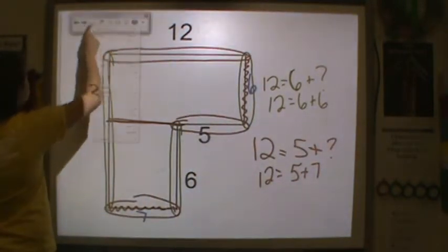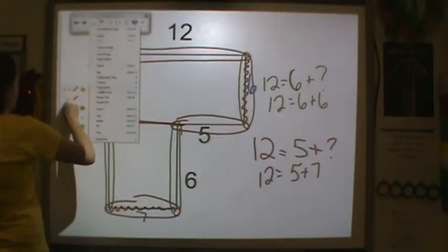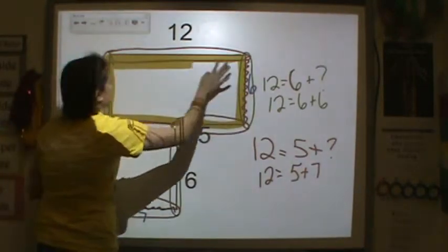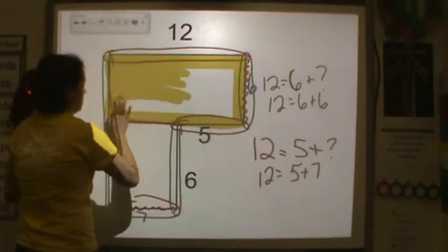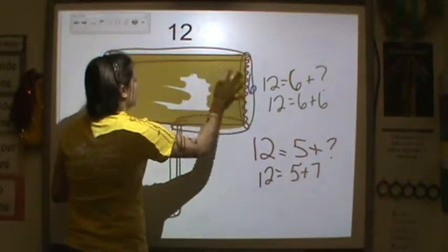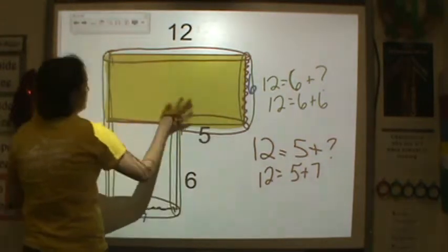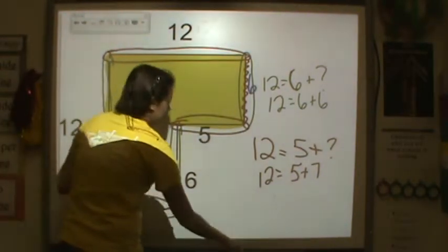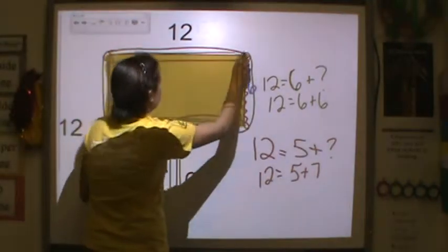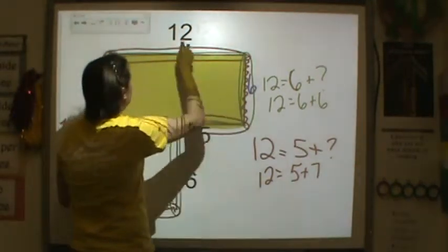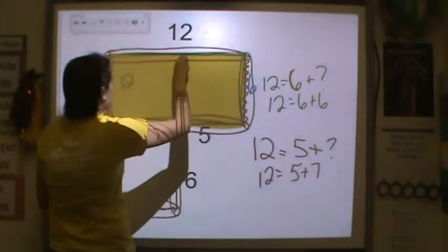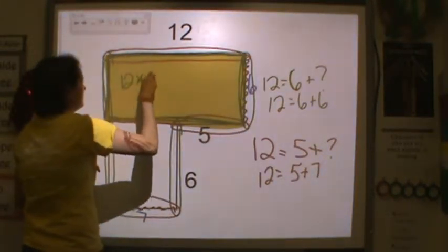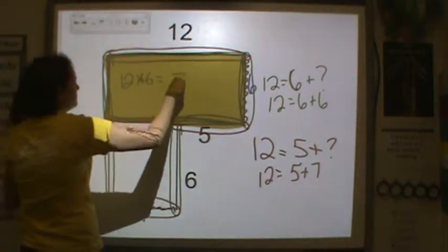The next step is to shade in one of the sides. I'm going to shade this top one so it's easy to distinguish between my two rectangles. If you want to grab a colored pencil or a highlighter, you're welcome to. The length of this rectangle all the way across is equal to 12, and the width is equal to 6. So 12 times 6 is equal to 72.